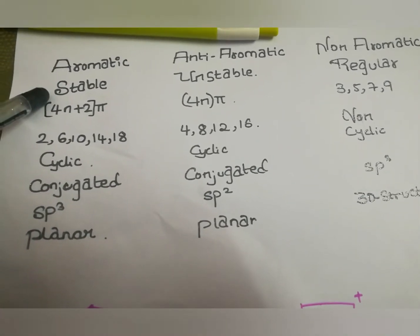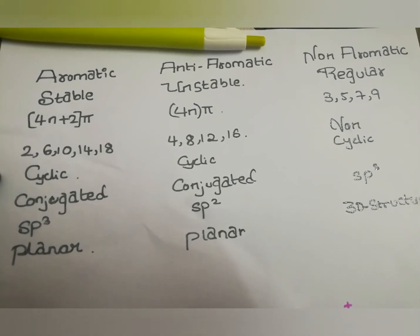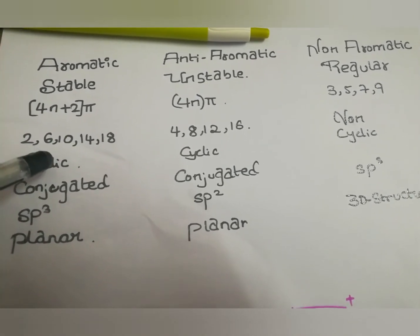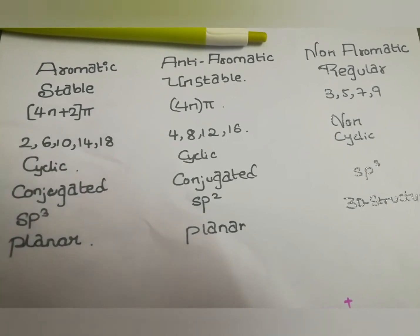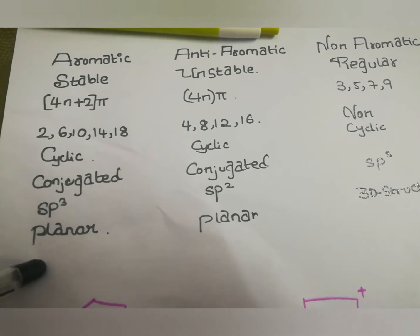First, aromatic compounds should be stable. It must contain 4n plus 2 pi and the integers should be 2, 6, 10, 14 and 18. It should be cyclic, conjugated, sp2 carbon and planar.